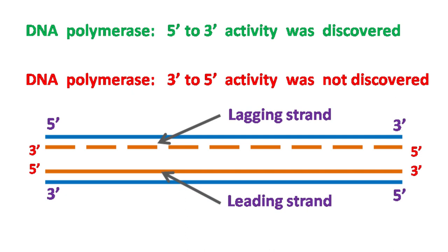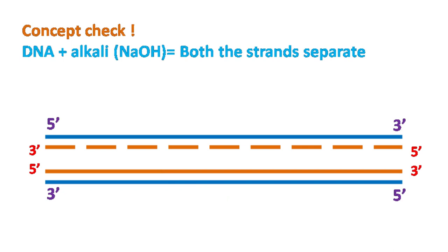while the strand whose synthesis occurs in continuous fashion is called the leading strand. One way to detect leading strand and lagging strand is to treat the replicating DNA with alkali like NaOH.